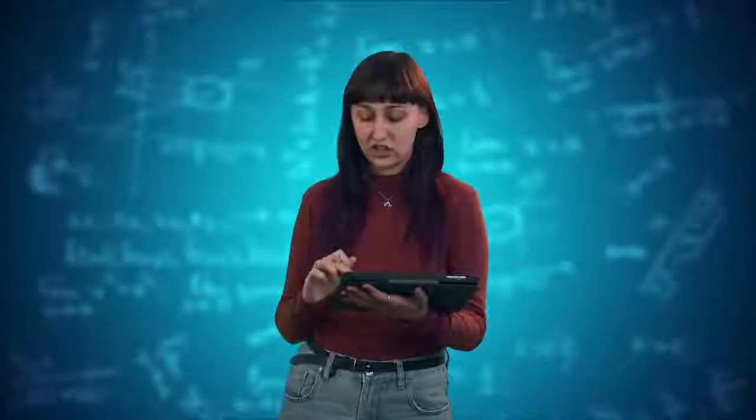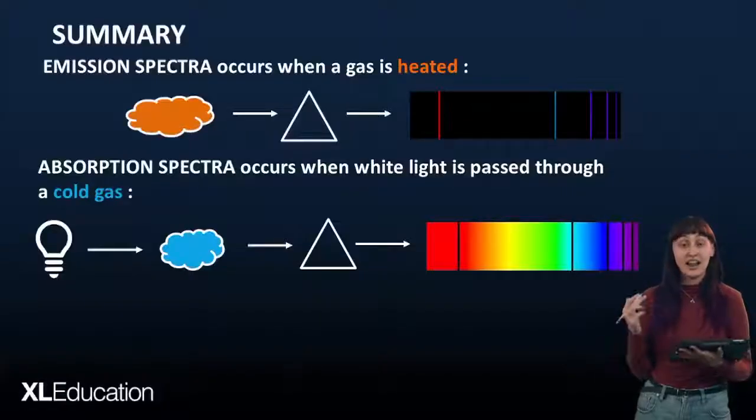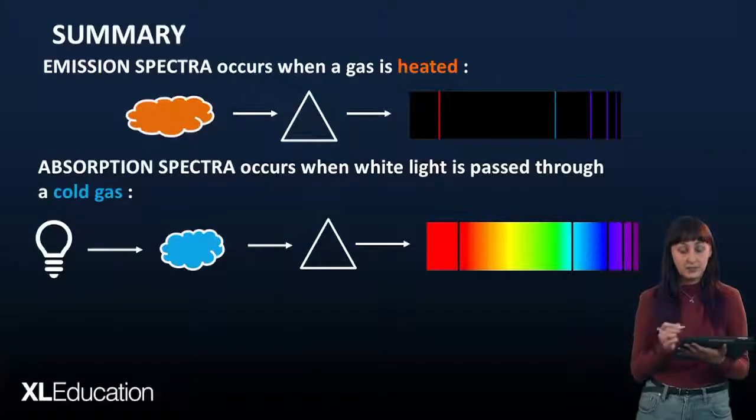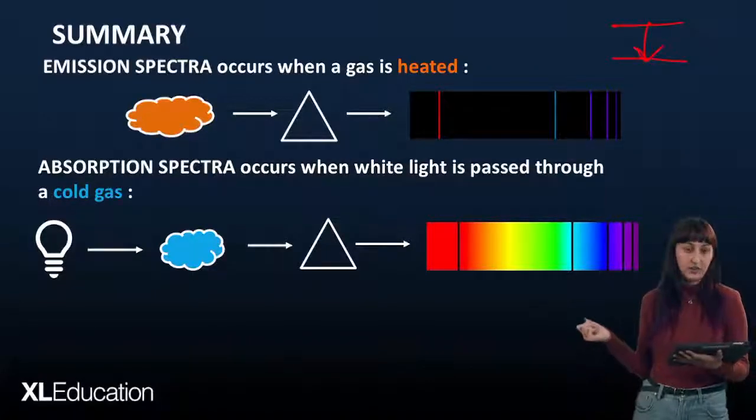What's really interesting is that the five lines that are missing from the absorption spectra are the five lines that are given off from the emission spectra. So in summary, the emission spectra occurs when a gas is heated and this gives off light. And these photons that are given off are due from the transition from a higher energy level to a lower energy level.